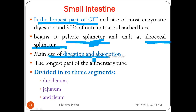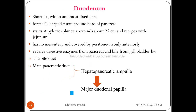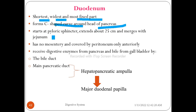The small intestine has three segments: the first is the duodenum, the second is the jejunum, and the third is the ileum. The duodenum is the shortest, widest, and most fixed part. It forms a C-shaped curve around the head of the pancreas. It starts at the pyloric sphincter, extends about 25 centimeters, and merges with the jejunum.